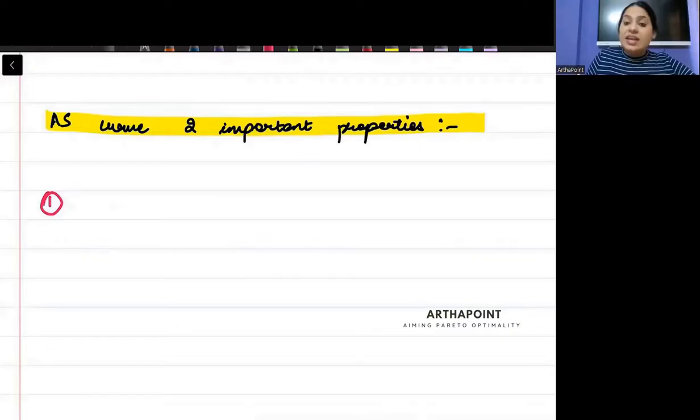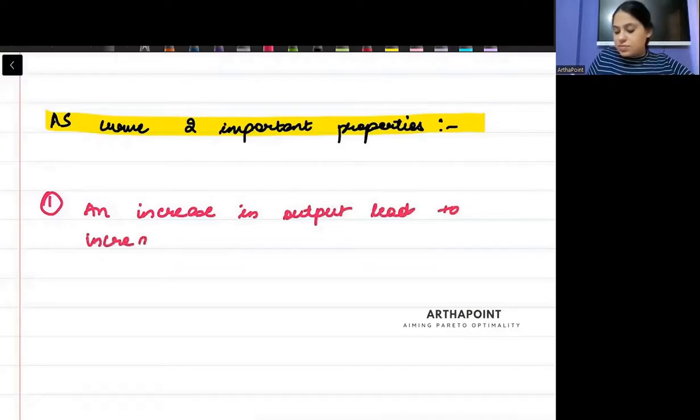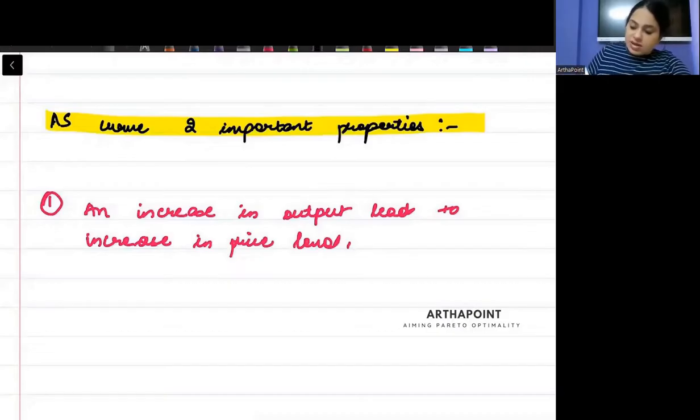It says an increase in output leads to increase in price level. What it means when I say increase in output leads to increase in price level, let me try to explain this.